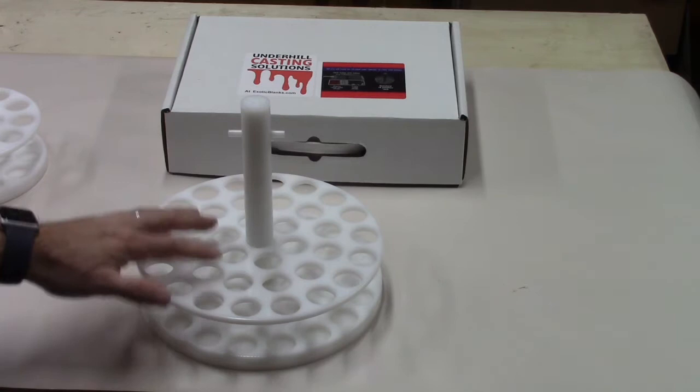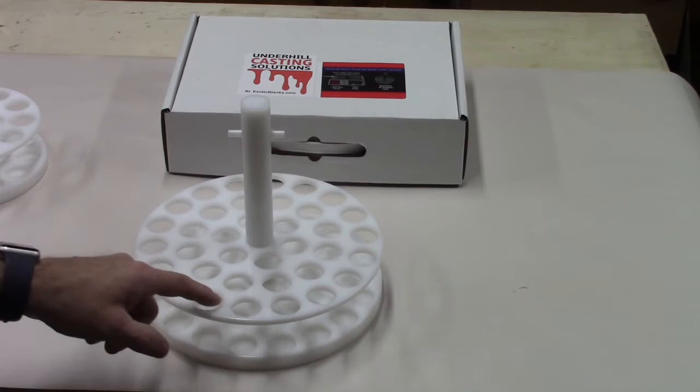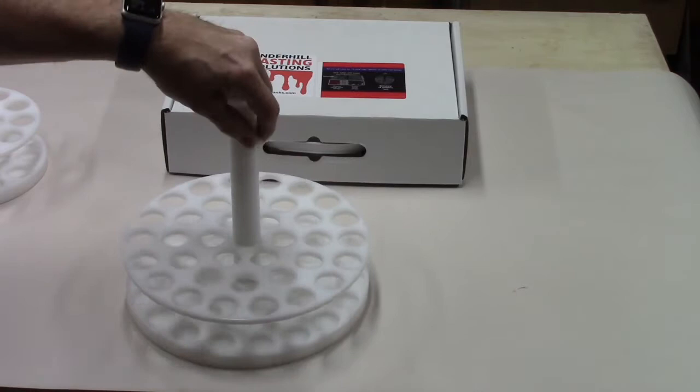When I'm pouring urethane resin, I usually only fill the outer edge of it. That way, as I pour, I can turn it and access each blank. I don't usually pour more than 18 or 20 at a time, because the resin starts to get a little thick, and you want to make sure you can get the air bubbles out under pressure.